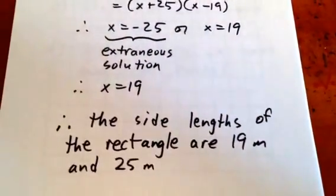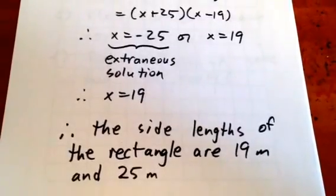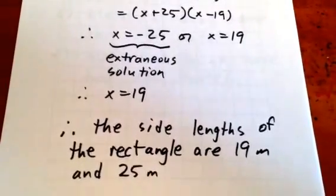Well, if x is 19, then the other side length is 6 meters longer, so the other side length would be 25 meters.